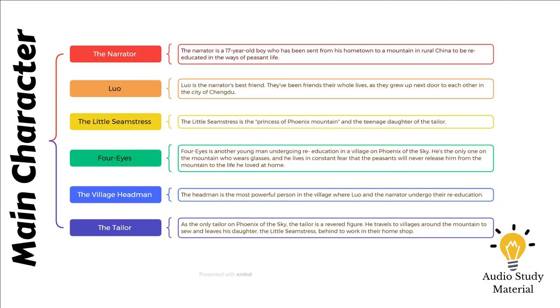When the headman returns, he is furious because the dental care he had in Yongjing was substandard. Since his father is a dentist, he asks Luo to fix his broken tooth, but Luo refuses.